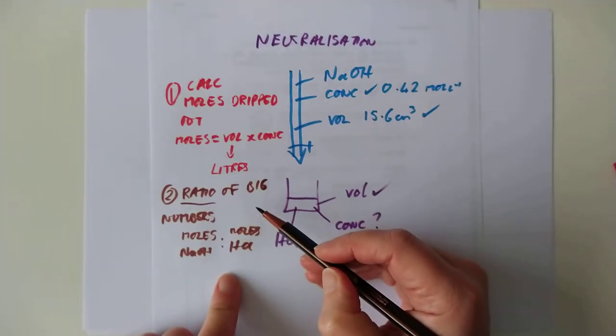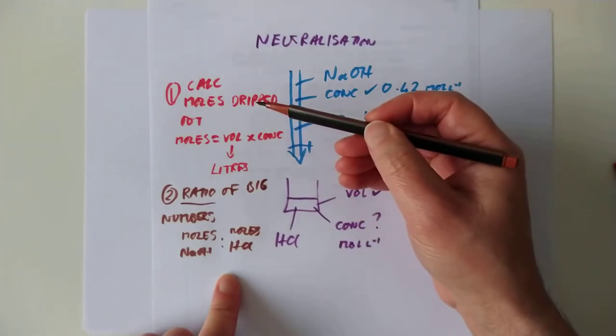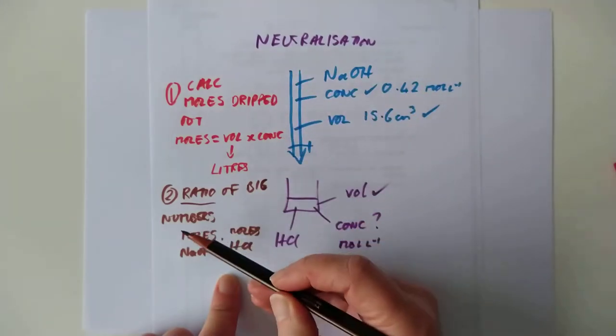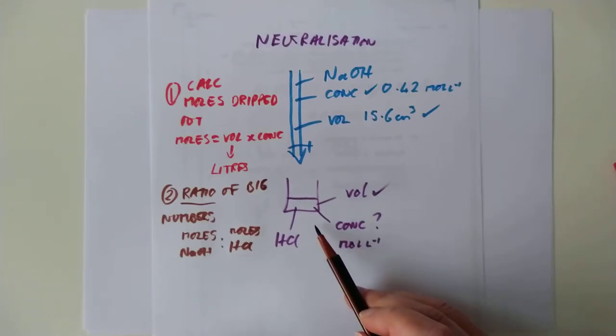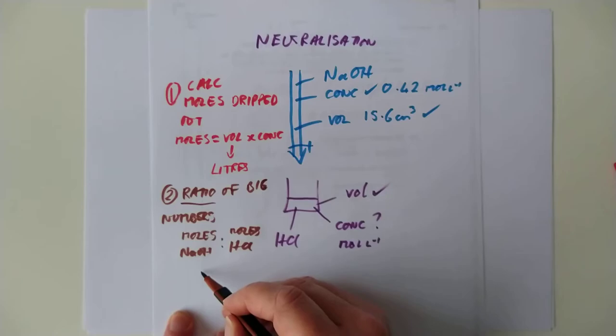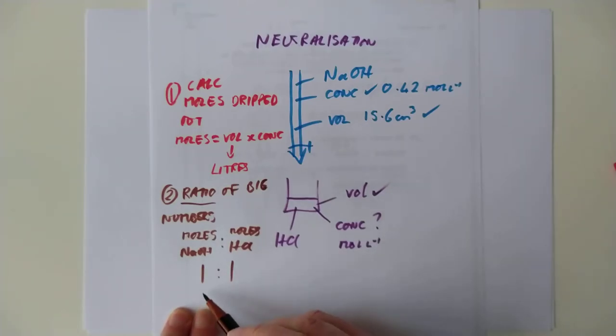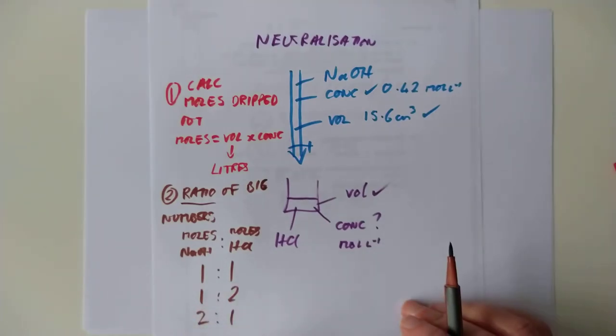Stage two is to do with the balanced equation. So, stage two is all to do with the big numbers in the balanced equation. Use the ratio of the big numbers. Some chemistry teachers are probably swearing at me for calling them big numbers. They should be called the stoichiometric ratio. It's the big numbers. You know what I mean. You have to look at the ratio of the big numbers.